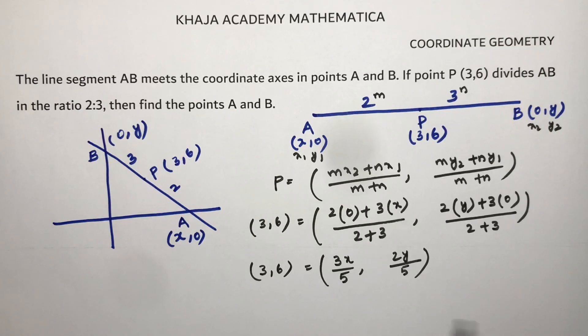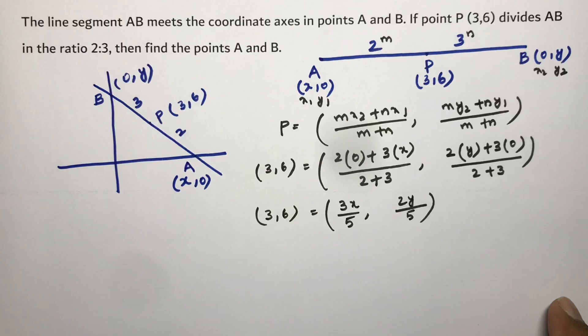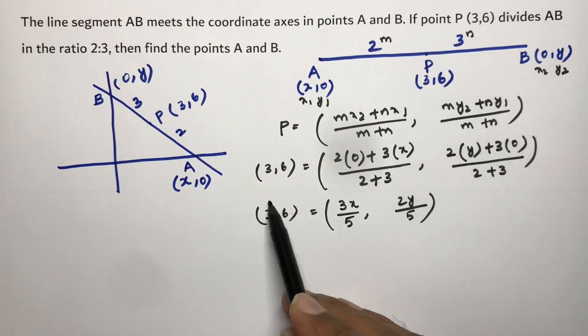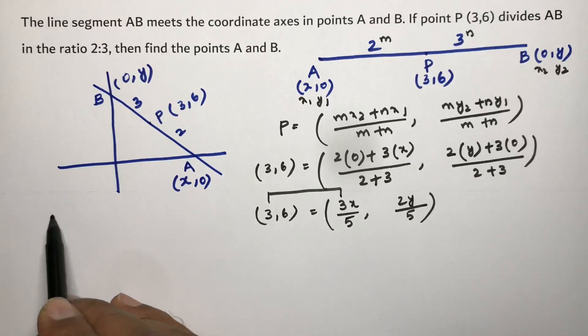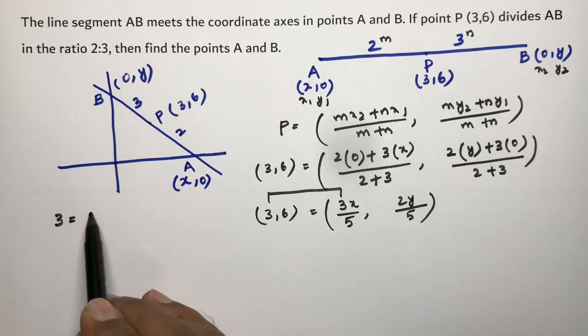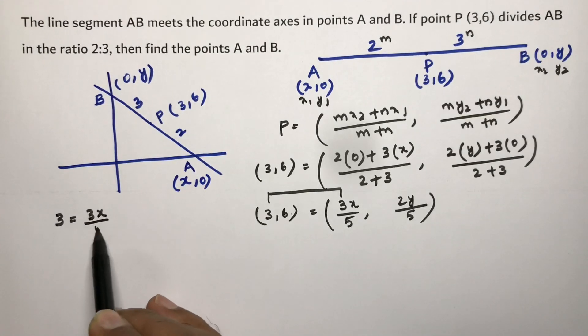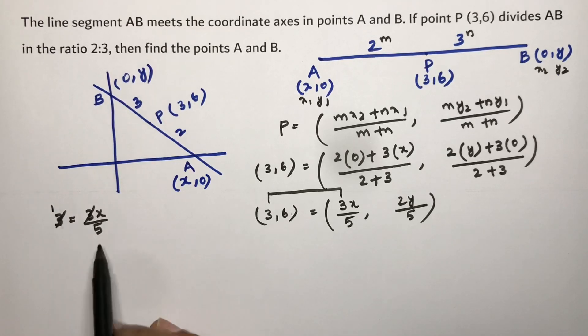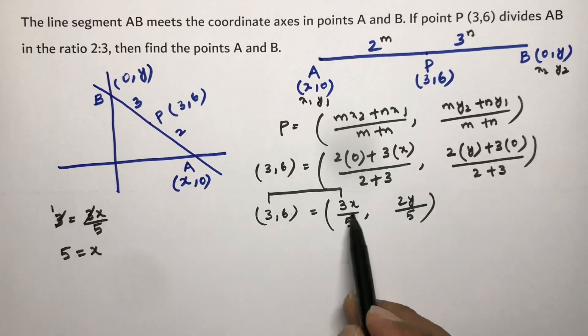First, if I'll equate the x values: 3 = 3x/5. Three and three cancel, so x = 5. In the same way, if I'll equate ordinate with ordinate, that is y coordinate with y coordinate...